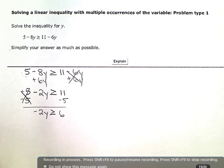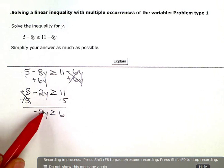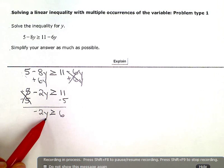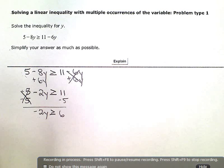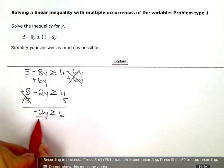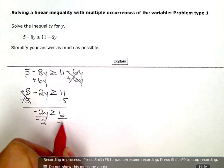My last step is to eliminate the coefficient that's attached or multiplied directly to the variable. So, this is negative 2 times y. The opposite of timesing by negative 2 is dividing by negative 2. So, I'm going to do that to both sides.